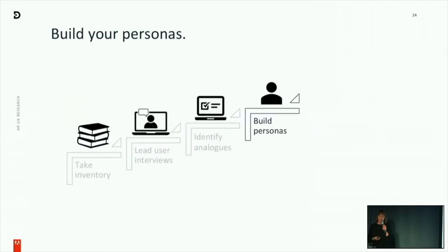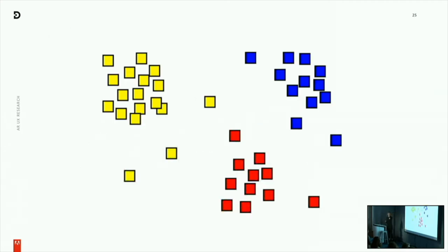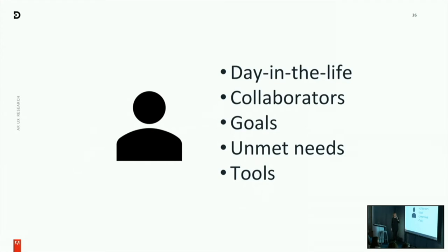With all of this information in hand — a wealth of qualitative and quantitative data — you can start building user profiles or personas, getting a portrait of who this user is by looking at patterns in convergent data. What I like to include in these user profiles: a day in the life of the user, who their frequent collaborators are, what their goals and motivations are, what their unmet needs are, and what tools they use.